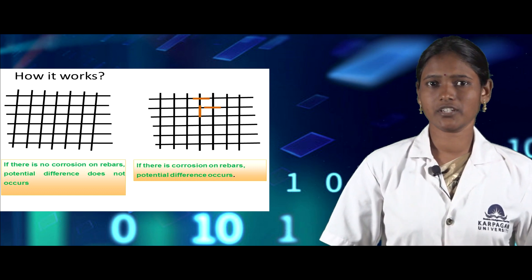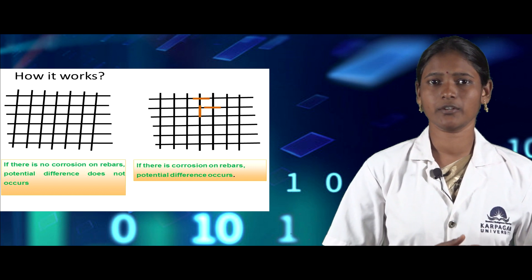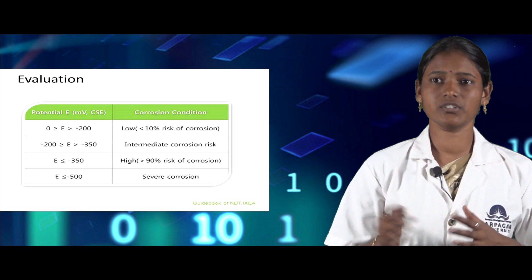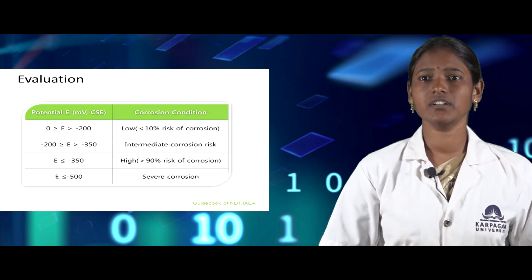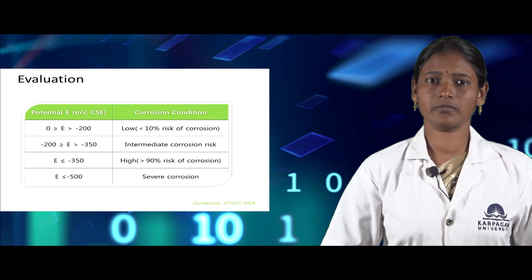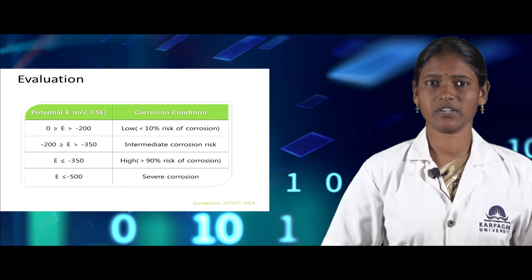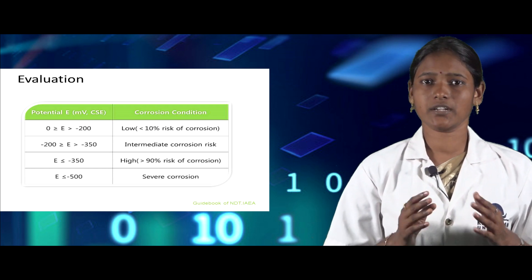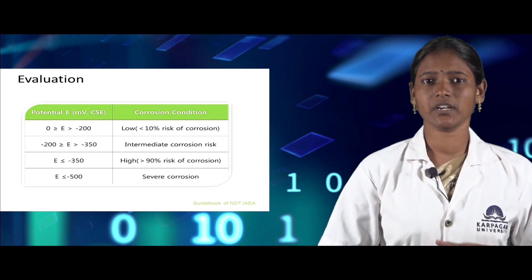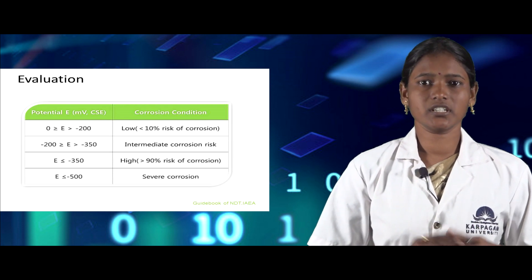The interpretation of test results for the half cell potential test is based on the potential flowing in the concrete and the corresponding corrosion condition. If the potential is 0 to minus 200 mV, corrosion is low. If it is minus 200 to minus 350 mV, it is intermediate. If it is less than minus 350 mV, it is high corrosion. If it is less than minus 500 mV, it is severe corrosion.